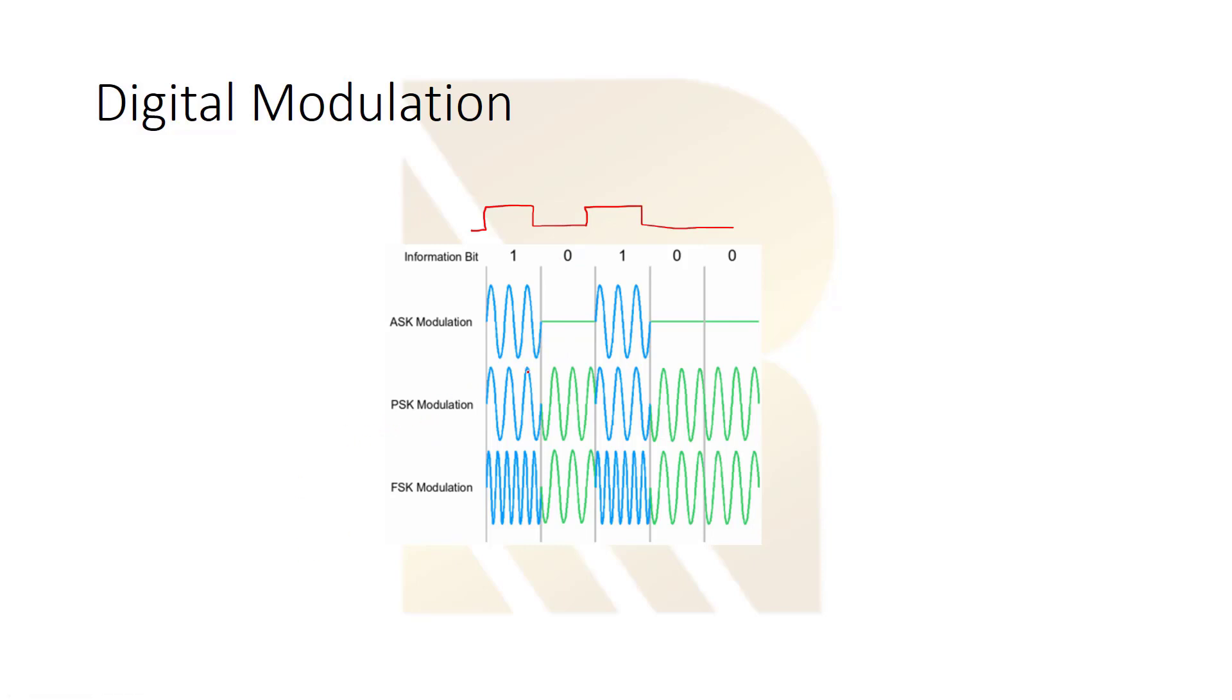For PSK modulation, when we have data 1, we have 0 phase. But when we have 0, we have 180 degrees difference. So 0, 180 degrees, and here is 180 degrees because it's two zeros.